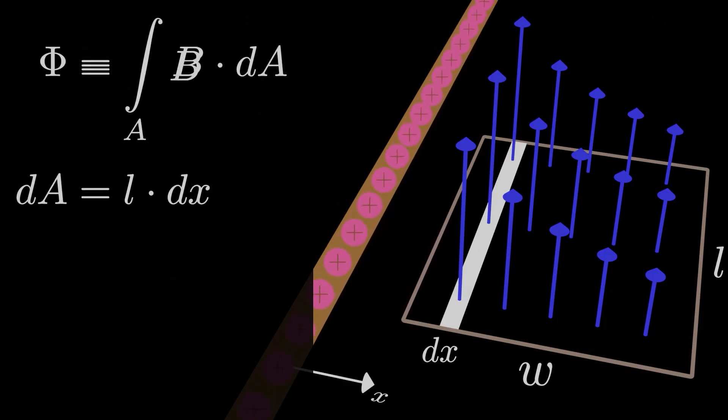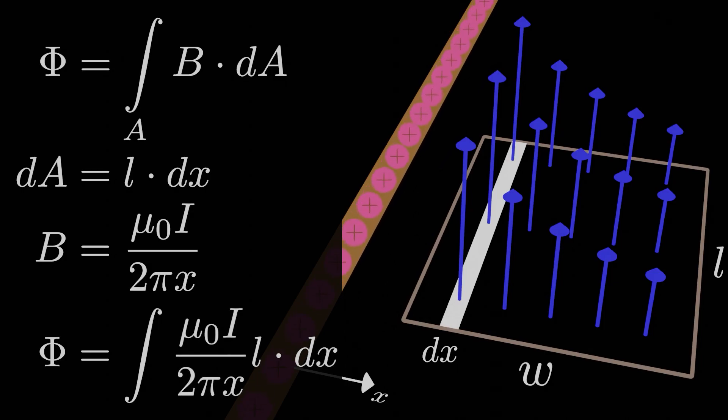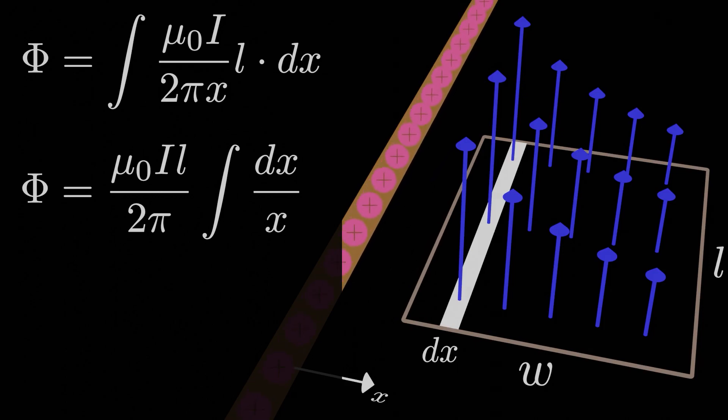Of course, if the magnitude of the magnetic field is mu-naught i over 2 pi r, we can replace r with x if we measure x from the long wire as our starting point. Plugging everything in, we have the magnetic flux through the loop as the integral of mu-naught i over 2 pi x, in other words, the magnitude of B times the length L times dx.